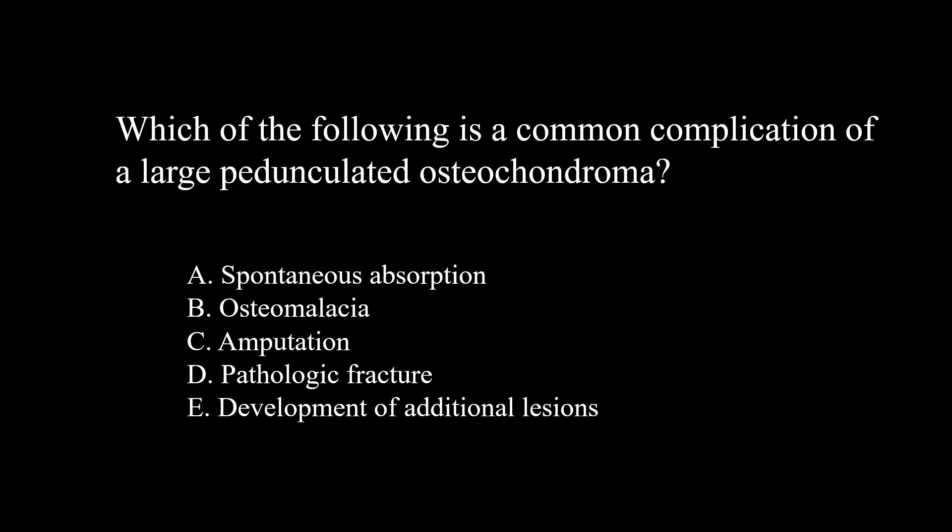Which of the following is a common complication of a large pedunculated osteochondroma? The best answer is pathologic fracture, though other complications include mass effect on adjacent structures, neurologic issues, and malignant degeneration.